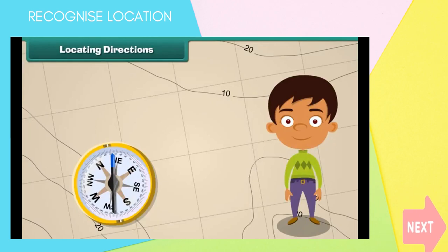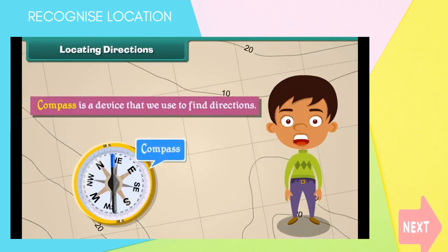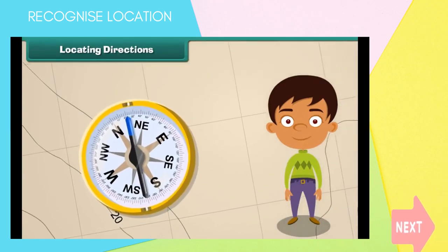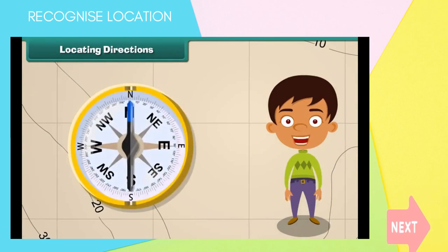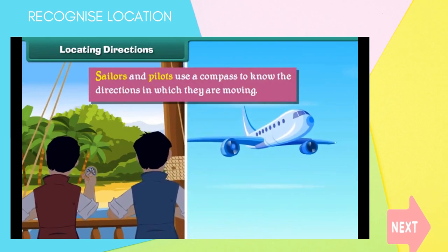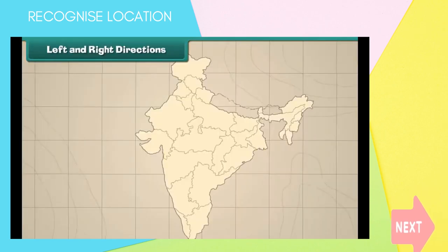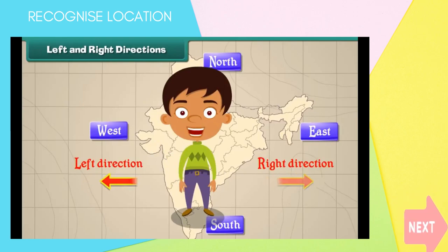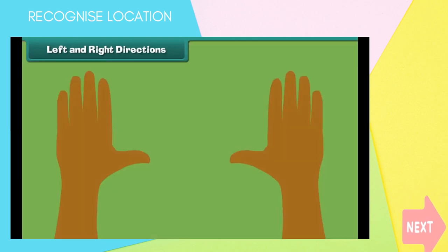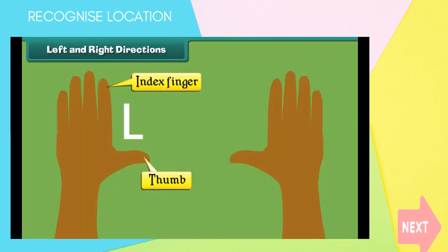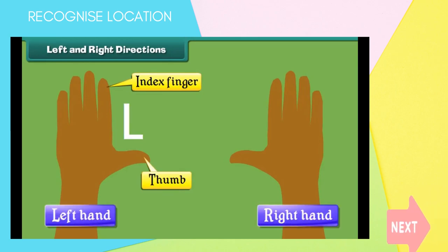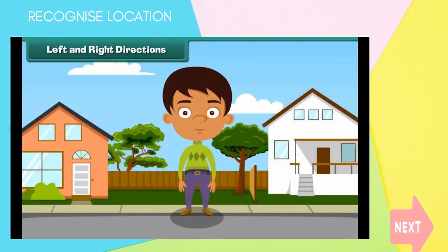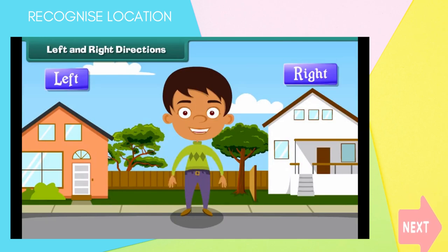The sun always rises in the east and sets in the west. A compass is a device that we use to find directions. It has a needle that rotates to indicate direction. The head of the needle always points towards north, and the tail towards south. Sailors and pilots use a compass to know the directions in which they are moving. We also use left and right directions to locate a place, using our hands to indicate them.